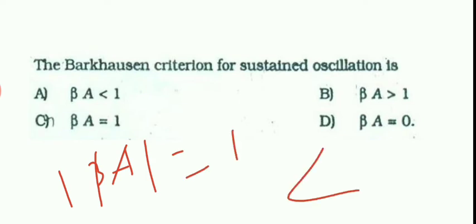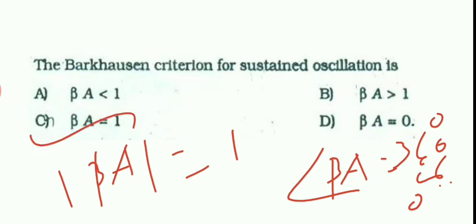Next, the Barkhausen criterion for sustained oscillation is. We have two criteria for Barkhausen. One is magnitude should be equal to 1, and another one is phase angle beta A is equal to 360 degree or 0 degree. So here the condition is magnitude of beta A is equal to 1. So option C is the correct one.